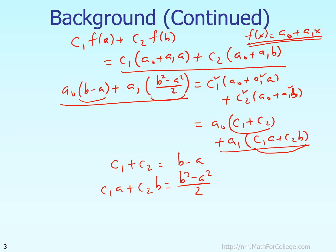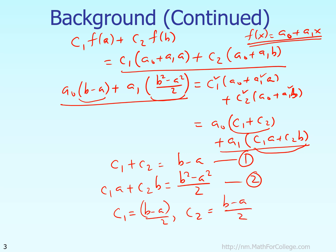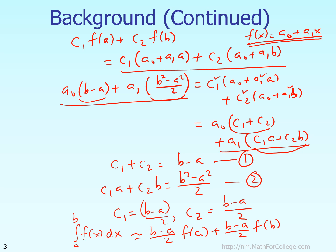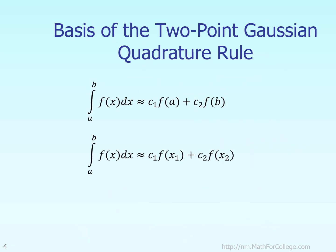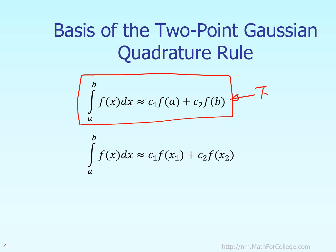Solving these two equations by simple algebra gives C1 = (B − A)/2 and C2 = (B − A)/2. Hence, our approximate formula is: the integral from A to B of f(x) dx ≈ [(B−A)/2]·f(A) + [(B−A)/2]·f(B), which is exactly the trapezoidal rule.